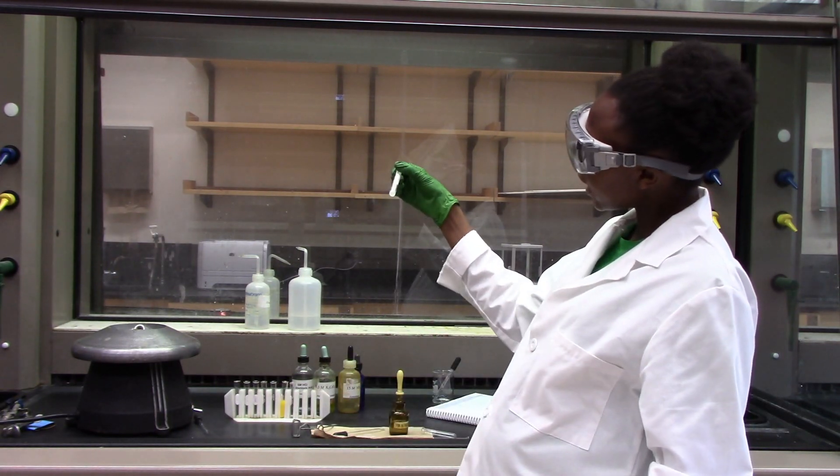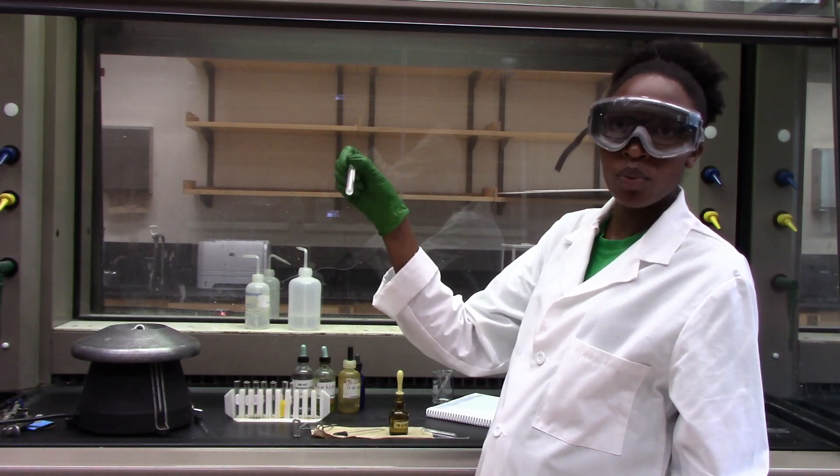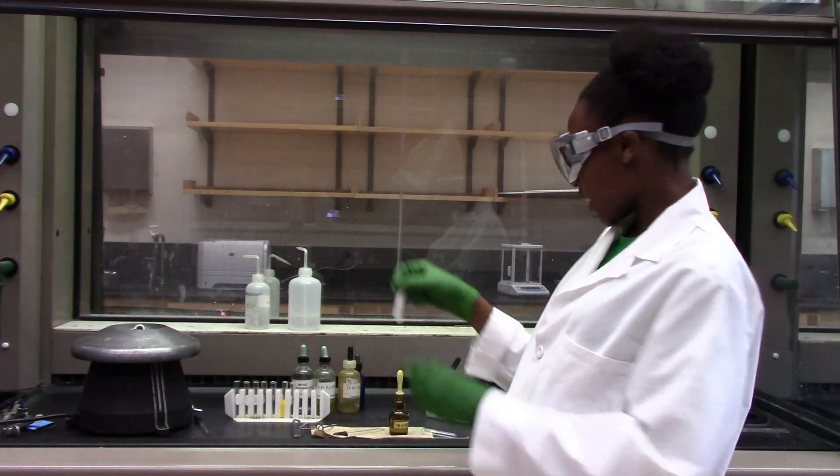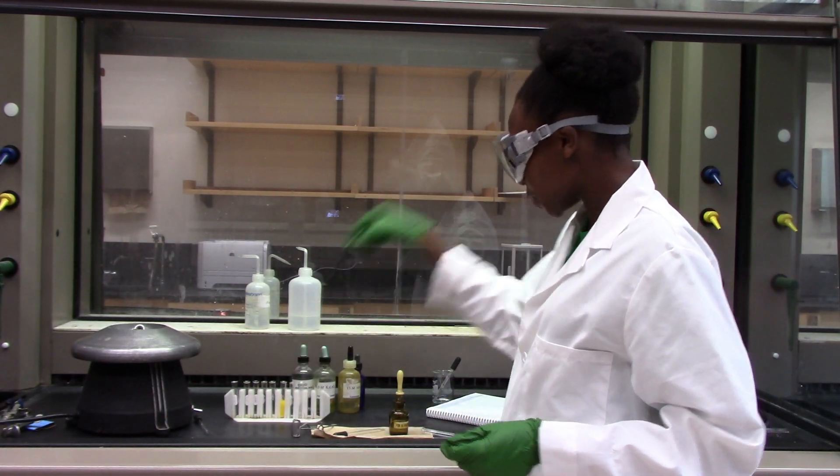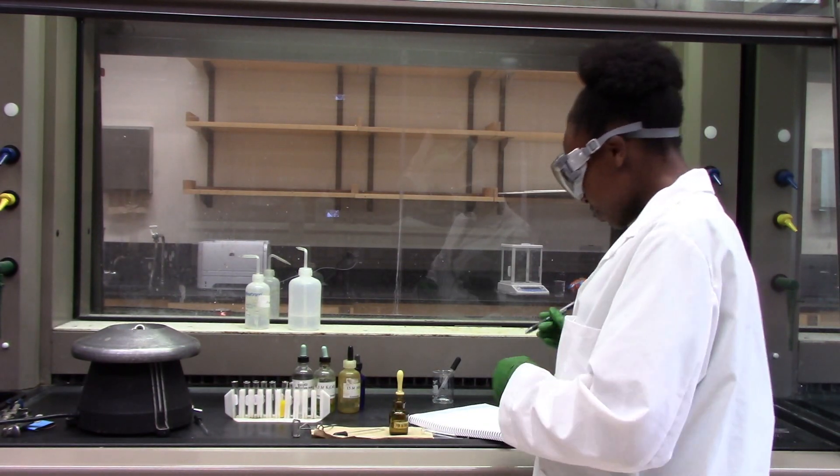Again, as you can see here, my solution has a white suspension to it. So we have a white precipitate. I'm going to note this observation down in my notebook that after adding nitric acid, I have a white precipitate.